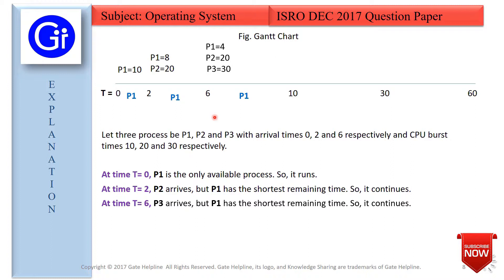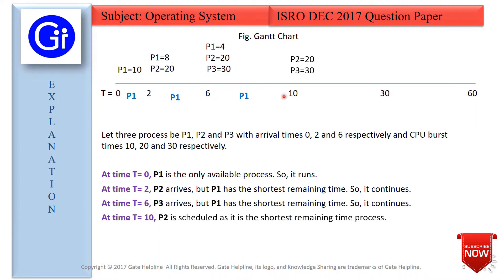Up to this point there has been only one context switch, which is at time t=0. At time t=10, P1 finishes because P1 had a burst time of 10 and has run from 0 to 10. We are now left with P2 and P3. Between P2 and P3, the shortest remaining time is with P2 — that is 20, since 20 is less than 30. So we start P2 from time t=10.